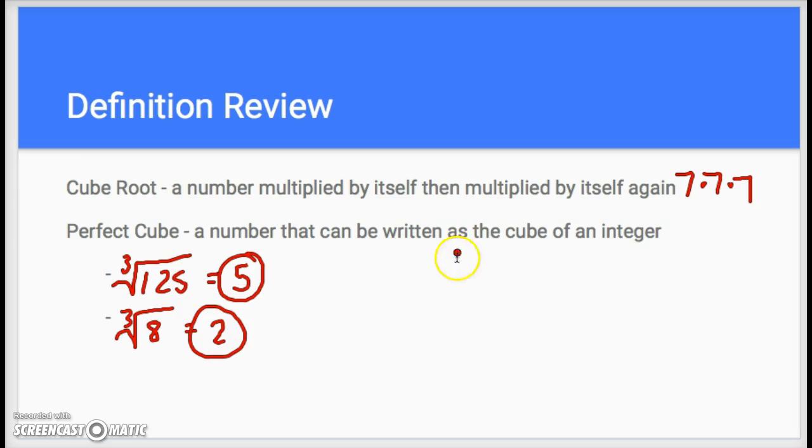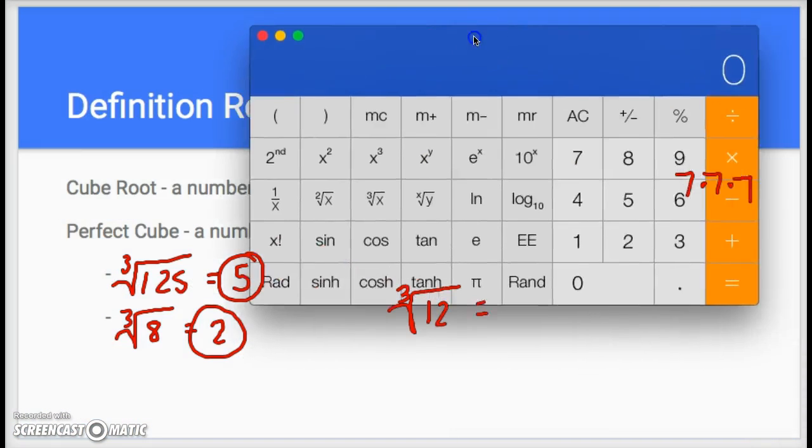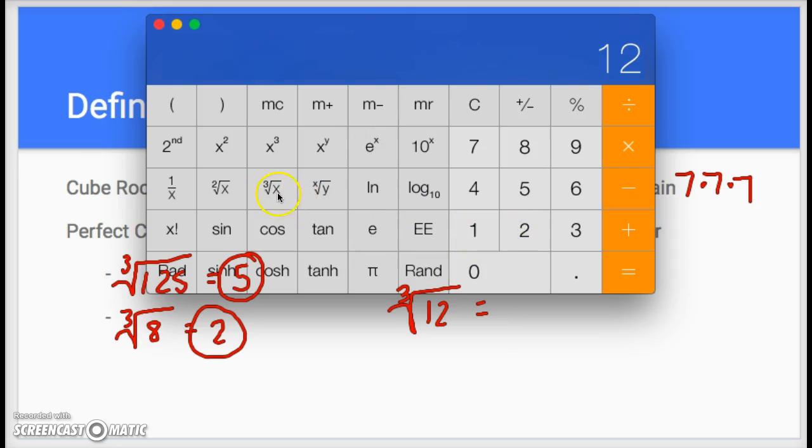One that would not be a perfect cube, I don't know, something like the cube root of twelve. If you were to figure that out, put that into the calculator, I'll pull mine up here really quick. I put in twelve and then I find the cube root of that, you get this great big long decimal. You do not get an integer, so that would not be a perfect cube. But we'll still be estimating these, dealing with them a little bit, but for the most part we'll be dealing with things that will be perfect cubes.